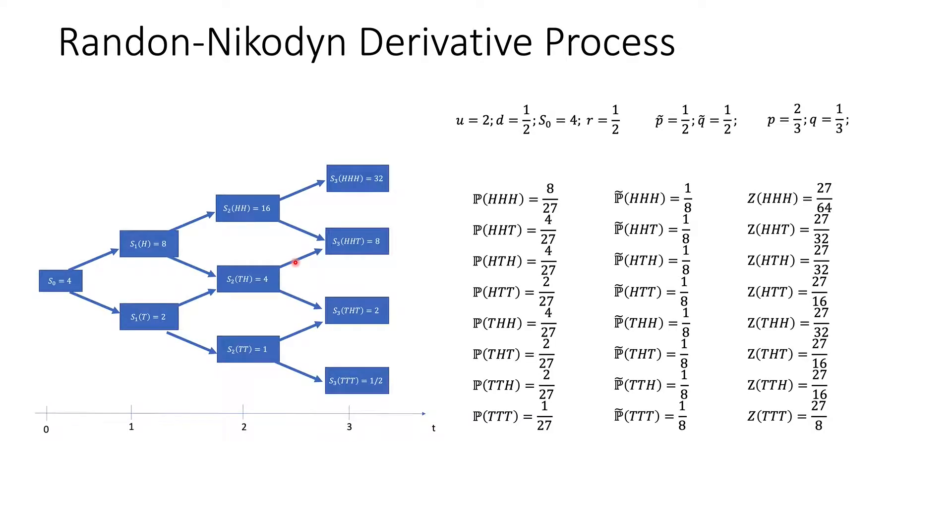In the previous section, we have already seen the Randon-Nikodym derivative Z of the risk-neutral probability with respect to the actual probability in an n-period binomial model. And if you remember well, this random variable Z depended on all coin tosses. And what I mean by that is, if you look at this picture that we showed in the previous video,